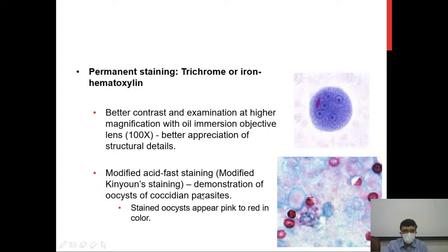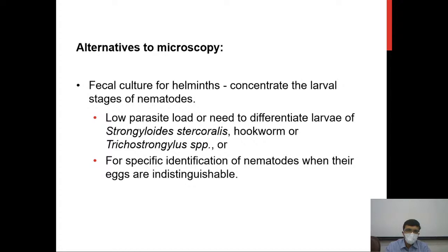Another example of permanent staining is the modified Kinyoun staining, also known as modified acid-fast staining. This is used for demonstration of oocysts of coccidian parasites such as Cryptosporidium, Cyclospora, and Cystoisospora. After staining, the oocysts appear acid-fast and look pink to red in colour. The procedure is similar to that for mycobacteria but uses a lower concentration of acid and different staining reagent concentrations.